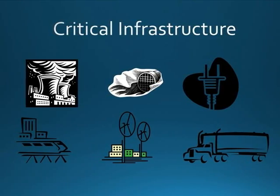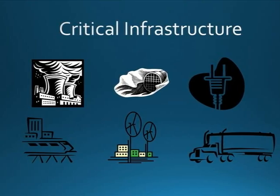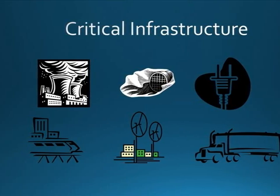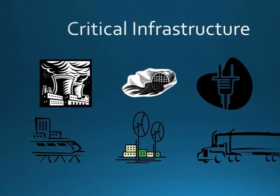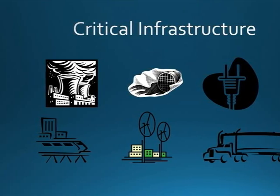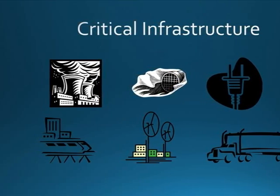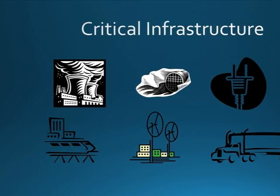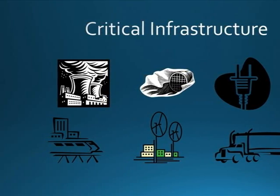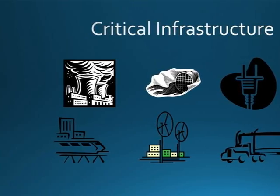A basic framework for developing sustainable critical infrastructure systems must include a broad and compelling vision, a focus on providing the integration of essential services, recognition of the interdependencies among the critical infrastructure systems, collaborative system-based approaches, and performance measures.